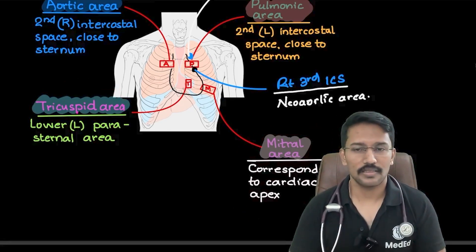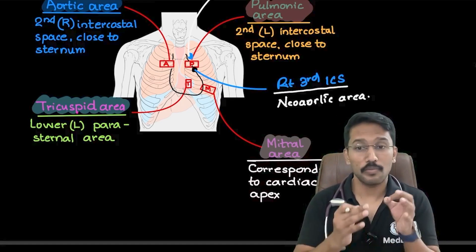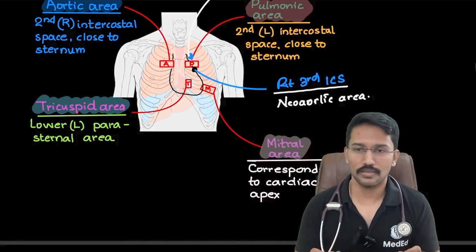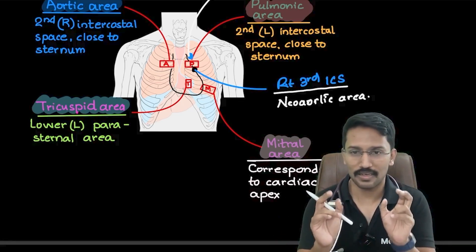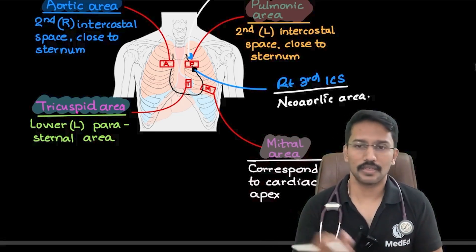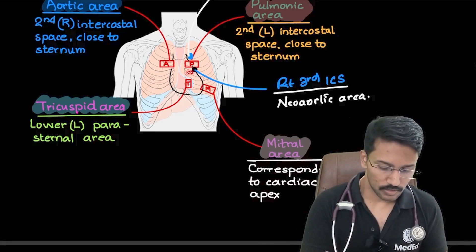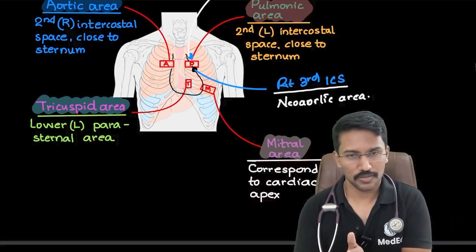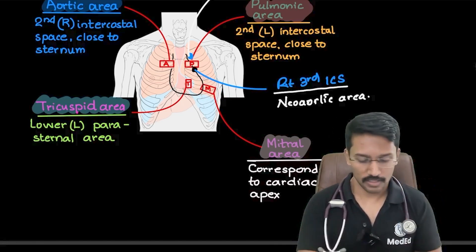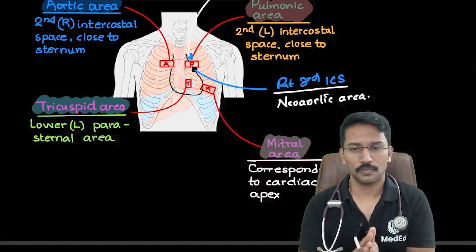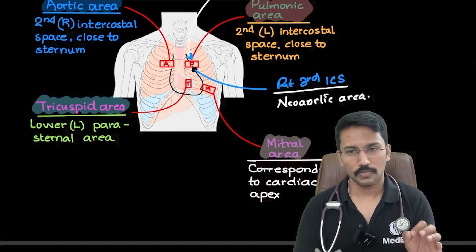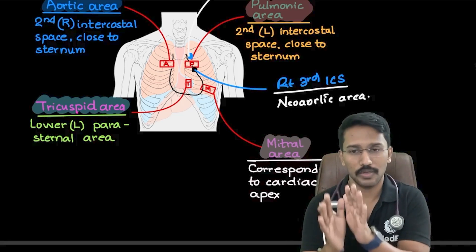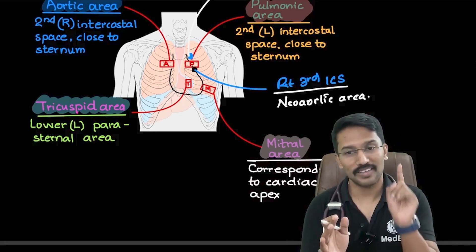Why is understanding these areas important? Because a murmur originating from a particular valve will be best heard in that area. It doesn't mean the murmur will not be heard in other areas — it may be heard elsewhere — but it will be best heard in its respective area. For example, the murmur of mitral stenosis will be best heard in the mitral area. So every time you read a question about a murmur or face a patient with a murmur, try to identify which area the murmur is best appreciated — probably the origin will be of that respective valve.